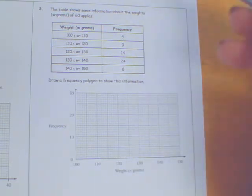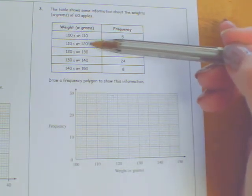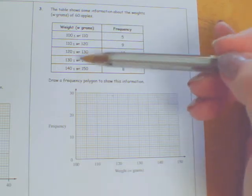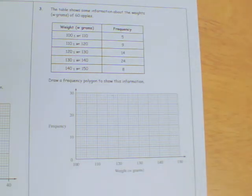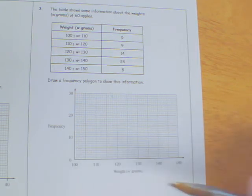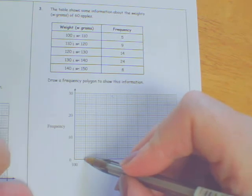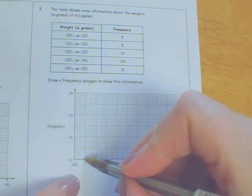So again, you'll see we've got the same sort of data. You'll see it's got the inequality symbols in this time. It doesn't mean anything different. It just means 100 to 110, and so on. And again, we're going to plot our points. Each of my small squares is worth 1. So I'm going to go 100 to 110, go to halfway, and I want to go up to 5.